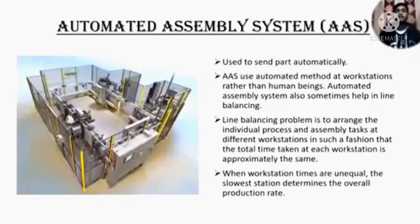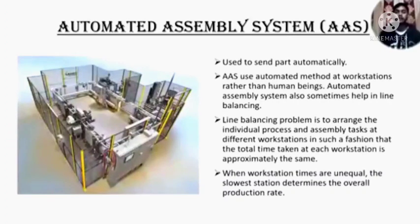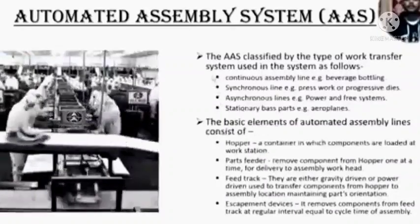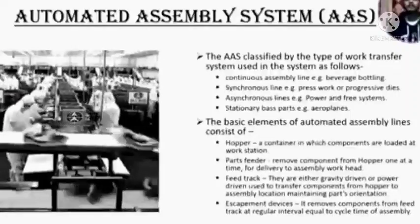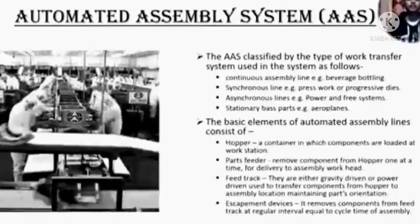Now we will discuss automated assembly systems, that is AAS. It is used to assemble parts automatically. Automated assembly systems use automated methods at workstations rather than human beings. Automated assembly systems are sometimes involved in line balancing. Line balancing problem is to arrange the individual process and assembly tasks at different workstations in such a fashion that the total time taken at each workstation is approximately the same. When workstation times are unequal, the slowest station determines the overall production rate. The AAS is classified by the type of work transfer system: continuous assembly line, synchronous line, asynchronous lines, and stationary base part (e.g., aeroplane).